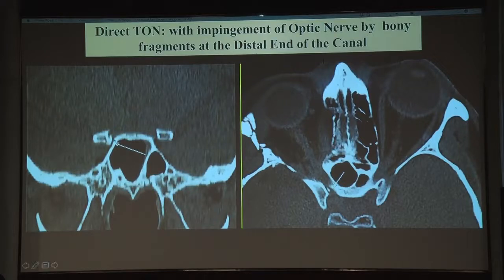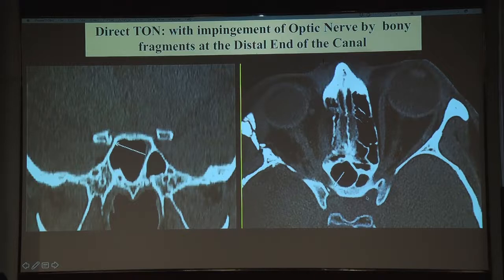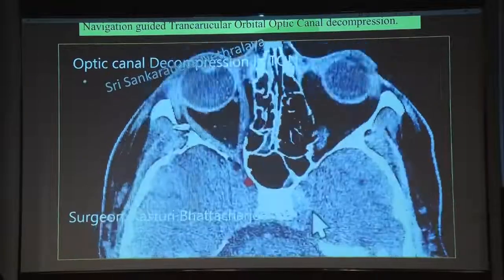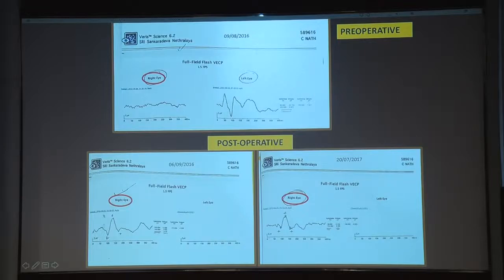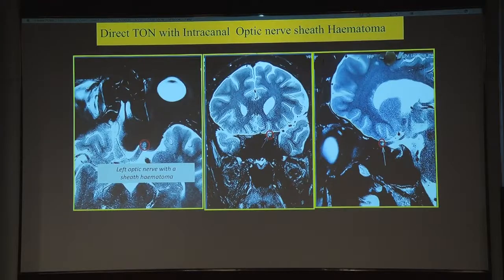Navigation protocol CT scans using 0.65 mm slices are essential — routine 1 to 1.5 mm CT cuts miss small bony fragments. In one patient with total NPL vision 6 to 8 weeks post-trauma, the navigation protocol CT revealed a small bony fragment impinging the optic canal. After decompression, VEP monitoring at one month and one year showed progressive improvement. Post-operatively, follow patients with VEP and OCT-RNFL, not just visual acuity.